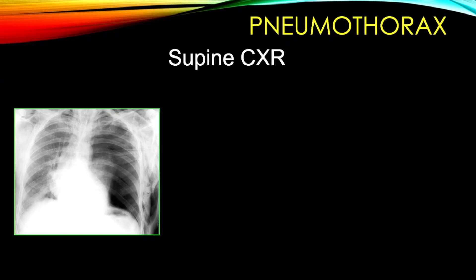On a supine x-ray, it's no more airway in the apex — you need to see a lucency, a generalized lucency in one part of the lung, more so in the lower parts, more so in the medial part of the lung in the paracardiac location. Your eyes need to be trained to pick up a pneumothorax on a supine x-ray.